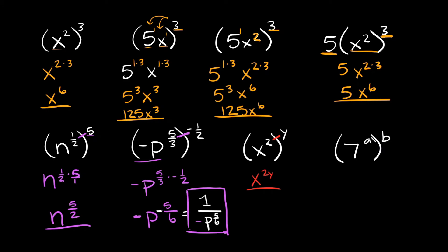Same process with the last example: 7 raised to the a in parentheses, raised to the b. Keep the base 7 and multiply the exponents — a times b, which simplified is just ab. So your final answer is 7 raised to the ab.